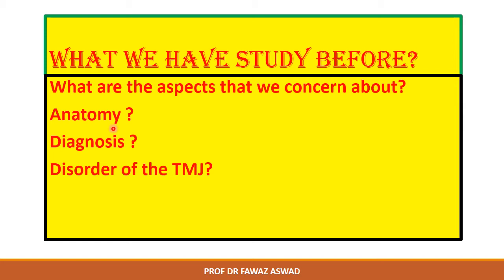The major ligament is the temporomandibular ligament, which is a thickened lateral portion of the capsule. The other types of ligaments are the stylomandibular and sphenomandibular ligaments. We also covered the movements of the TMJ, which include rotational and translational types of movement.